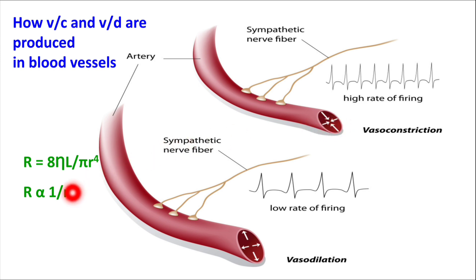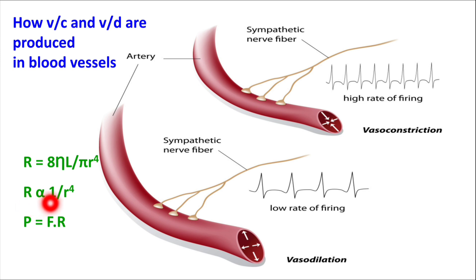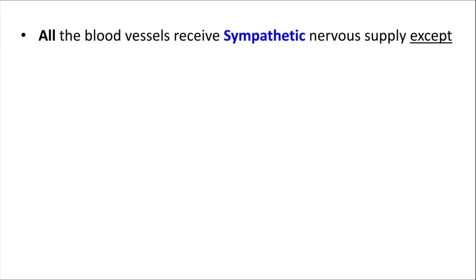There is an inverse relationship between vessel radius and resistance to blood flow. When as a result of vasoconstriction the vessel radius is reduced, resistance to blood flow increases, and when resistance increases, blood pressure can increase because pressure equals flow multiplied by resistance. In summary, vasoconstriction increases blood pressure, and the reverse happens with vasodilation — when vasodilation occurs, blood pressure usually decreases.